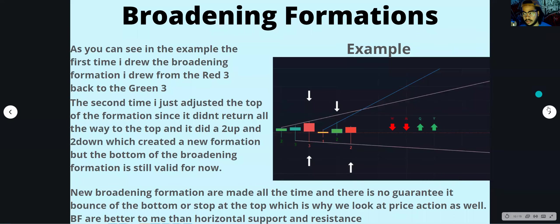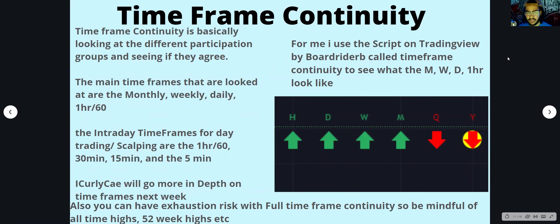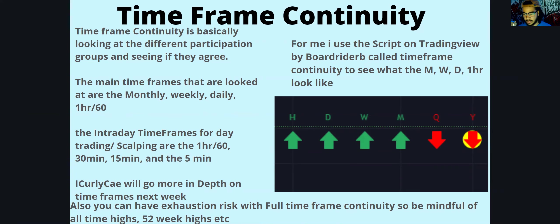Time frame continuity is basically looking at different participation groups and seeing if they agree. Some people buy stocks by the month, some by the week — and if they buy by the week, they may take profit on Friday. Some are day traders, some scalpers by the hour. We identify these participation groups by time frames. The main time frames are monthly, weekly, daily, and one hour. The intraday time frames are one hour, 30 minute, 15 minute, and five minute.